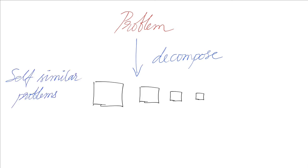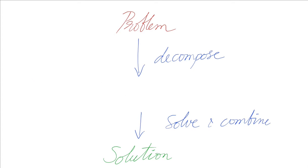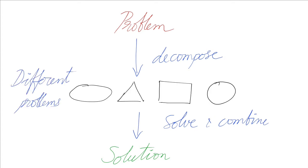So we have a problem, we decompose the problem into self-similar problems. We solve and combine to get the solution to the original problem. So this does not work. In this case, what do we do? We have a problem, we decompose, we get different problems when you decompose the problem.